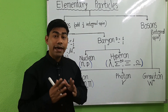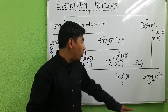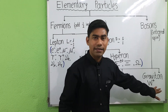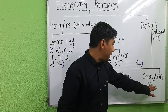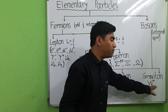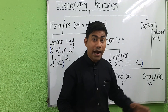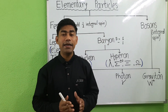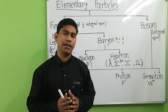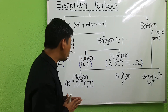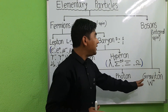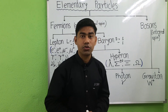The example of graviton is the W plus particle, and they participate in gravitational interaction. So these are the three types of bosons.